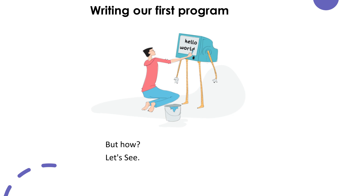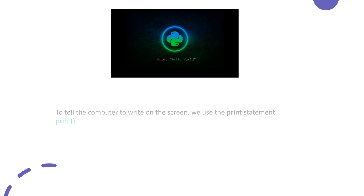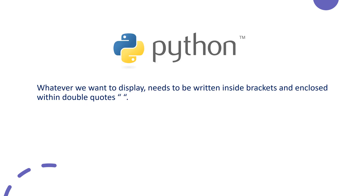To tell the computer to write on the screen, we use the print statement — print and two round brackets. It's a built-in function in Python to display things on the screen. A built-in function is a function which is predefined and can be used directly. Whatever we want to display needs to be written inside brackets and enclosed within double quotes.